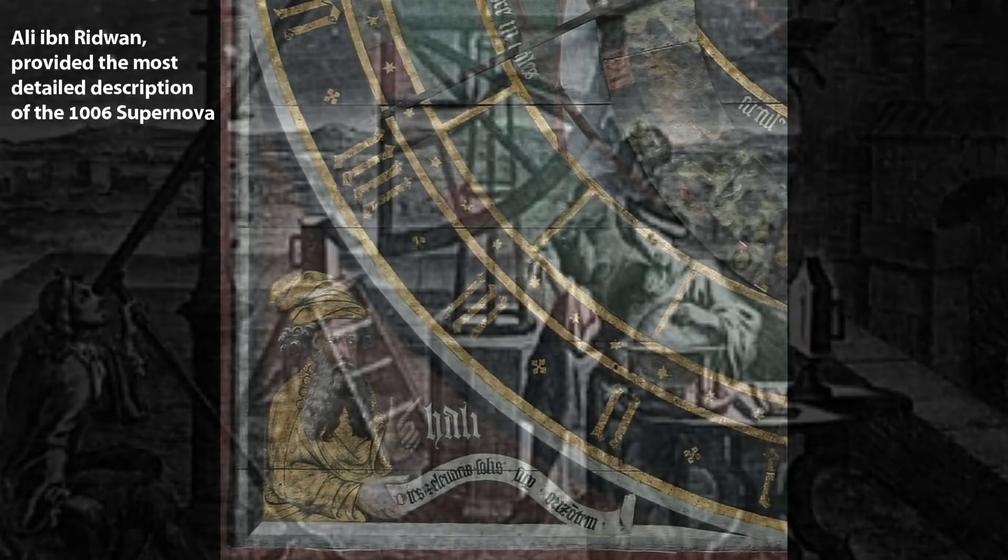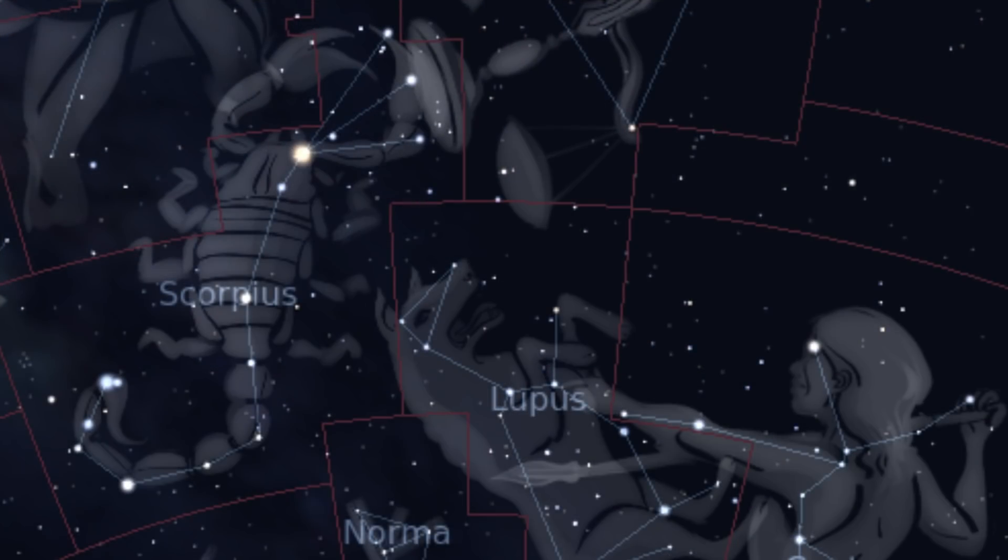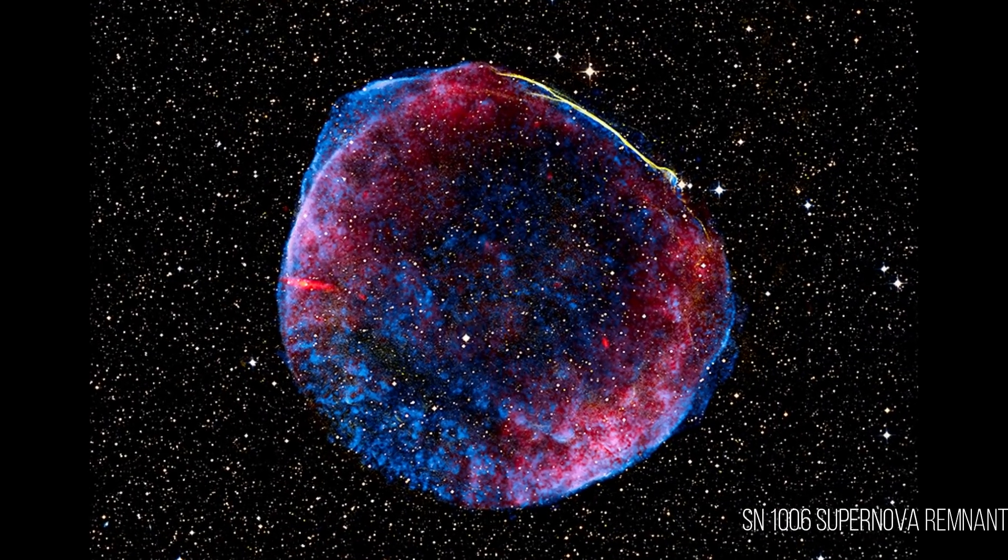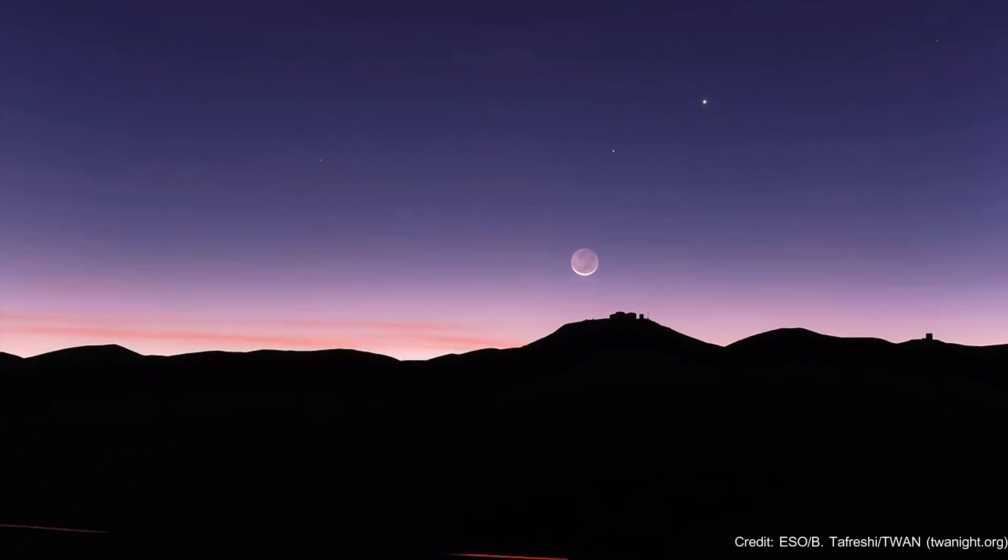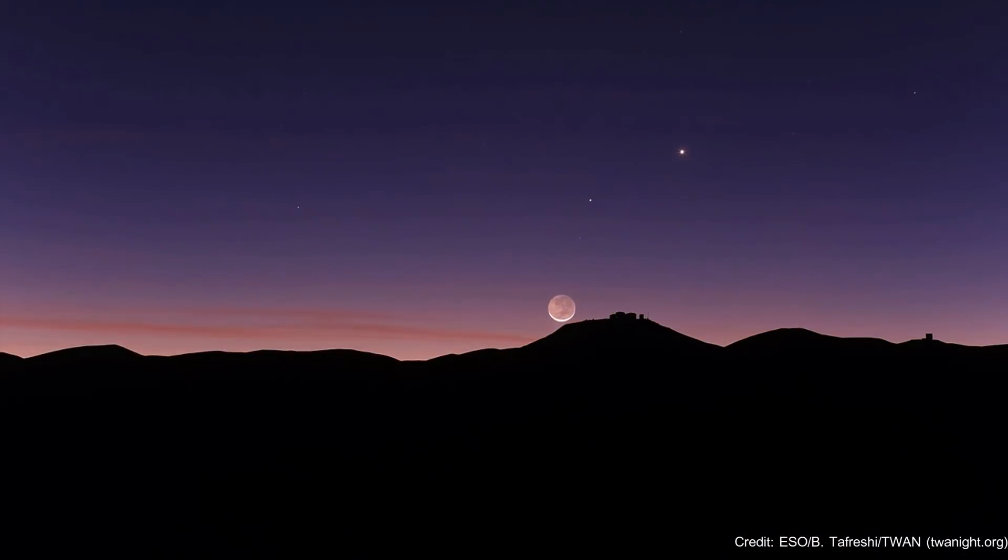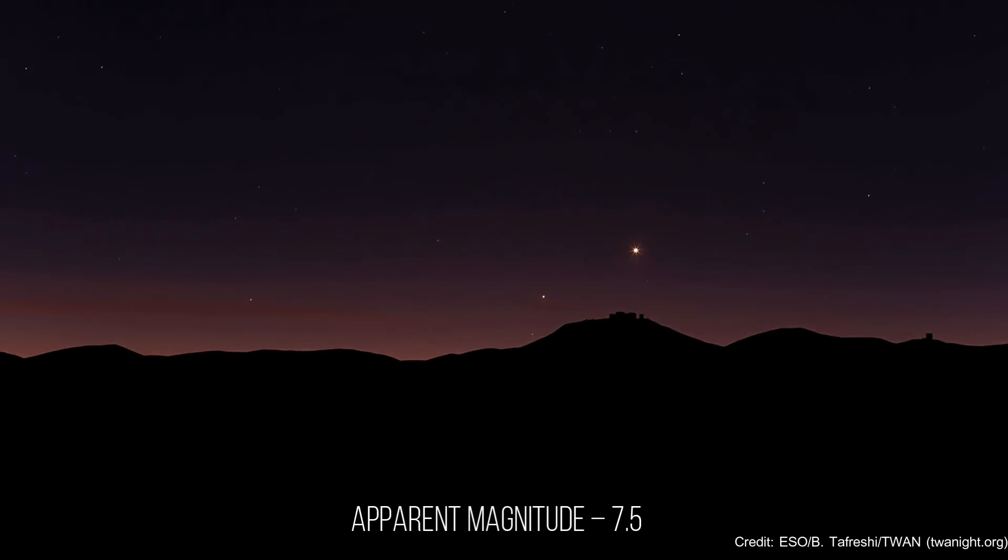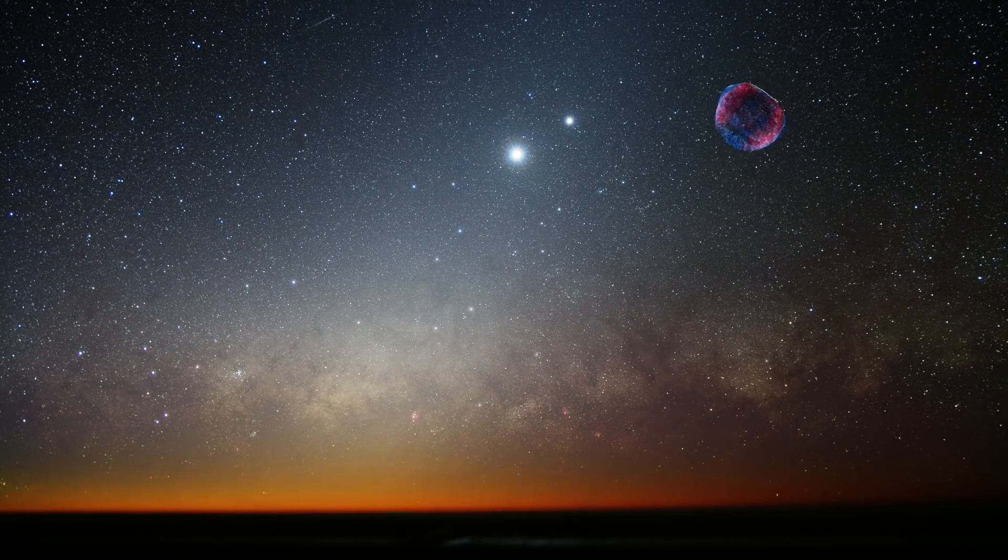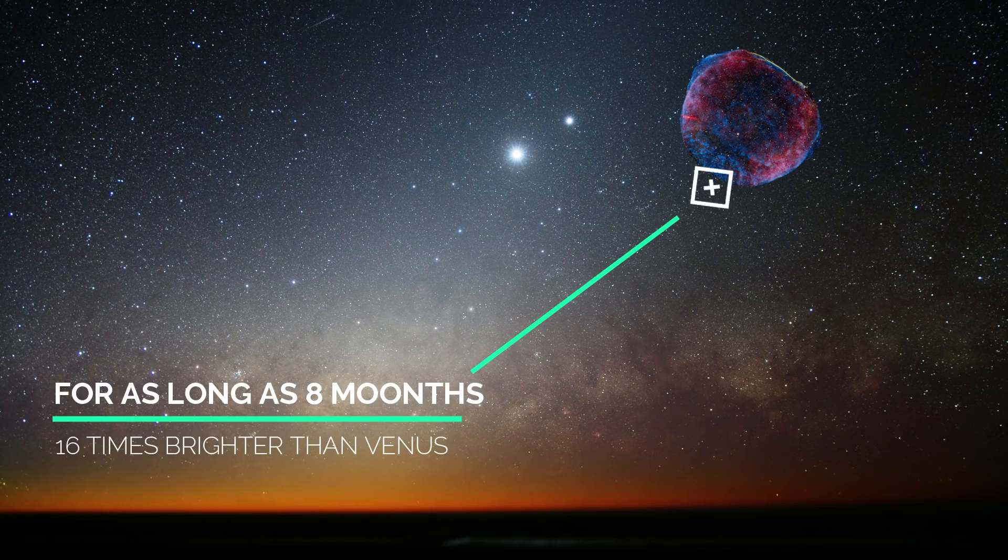Later in the year 1006 AD, a bright star exploded in the constellation Lupus. That probably was the biggest supernova ever seen using the naked eye. The current estimates suggest an apparent magnitude of minus 7.5, which might have been 16 times brighter than Venus and were the brightest object in the night sky other than our Moon for as long as 8 months.